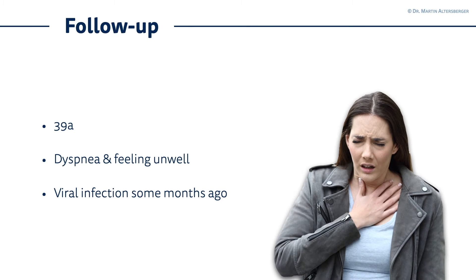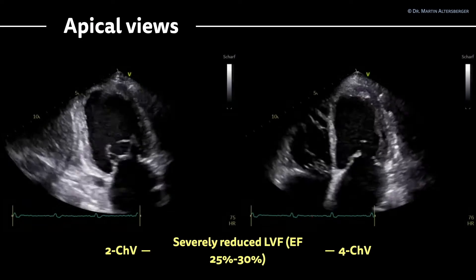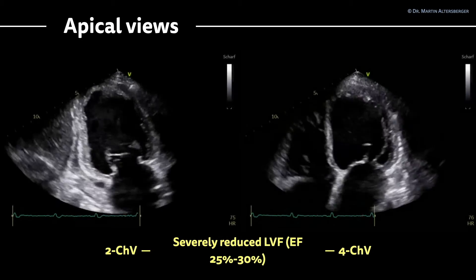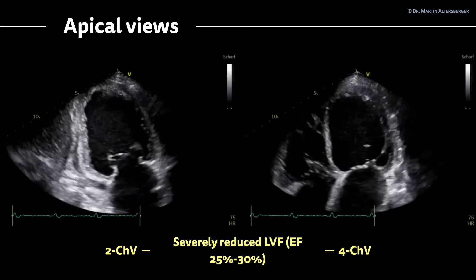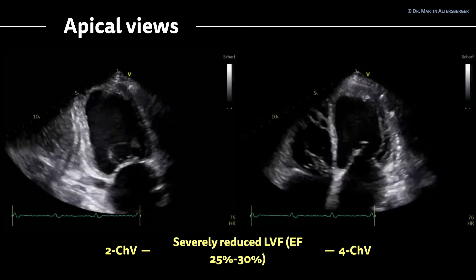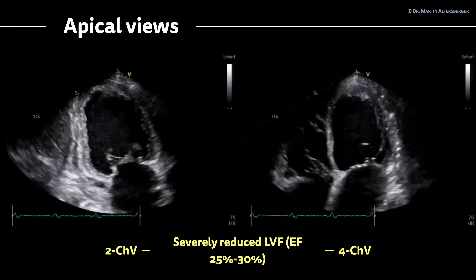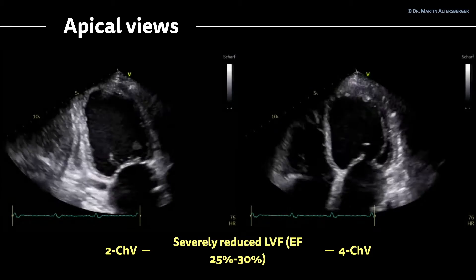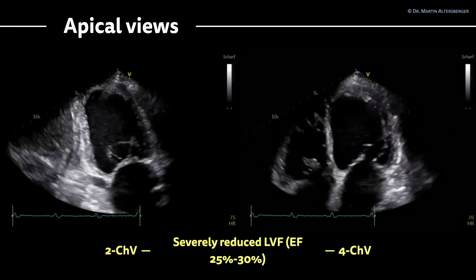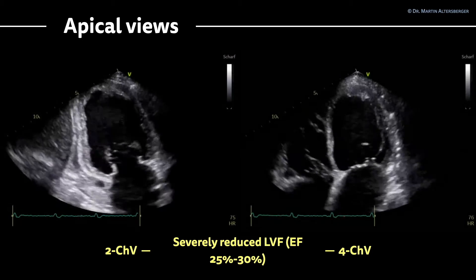Recently, we discussed a young 39-year-old female patient with dyspnea who was feeling unwell. She had a viral infection some months ago. If you take a look at the apical views — the apical 2-chamber view on the left side of the screen and the apical 4-chamber view on the right side — we do see a severely reduced left ventricular function.